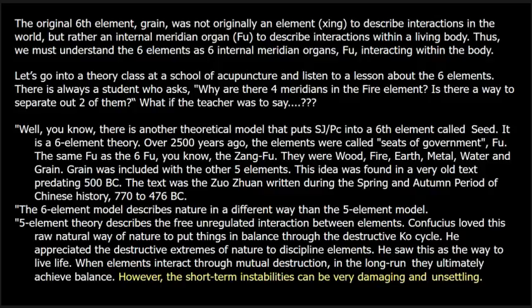They were wood, fire, earth, metal, water, and grain. Grain was included with the other five elements. This idea was found in a very old text predating 500 BC — the Zhuozhuan, written during the spring and autumn period of Chinese history, 770 to 476 BC. Five element theory describes the free, unregulated interaction between elements. Confucius loved this raw, natural way of nature — to put things in balance through the destructive co-cycle. He appreciated the destructive extremes of nature to discipline elements and saw this as the way to live life.